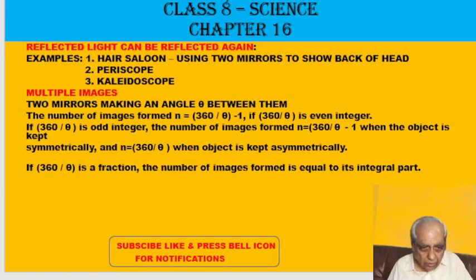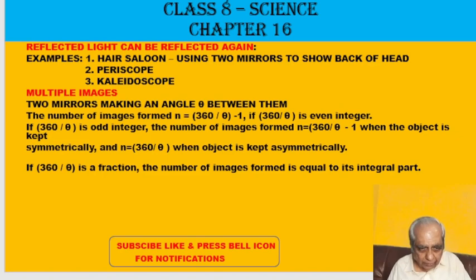Now let us see how multiple images are formed. Reflected light, if it falls on another object or mirror, gets reflected again — whether it falls on a plane mirror or any other object. This process can continue, meaning reflected light behaves just like ordinary light.